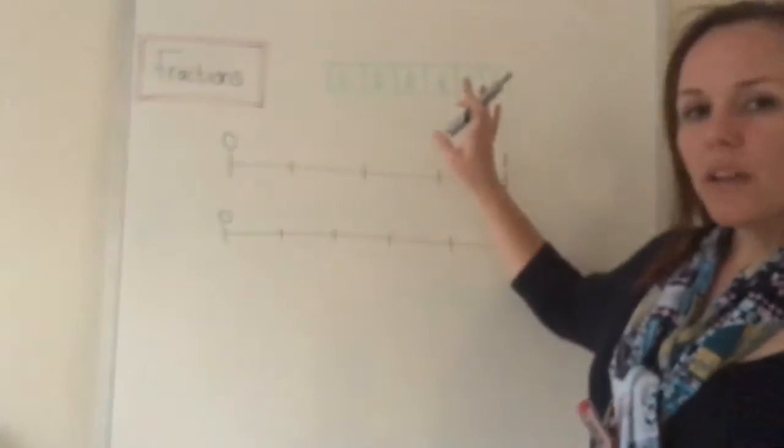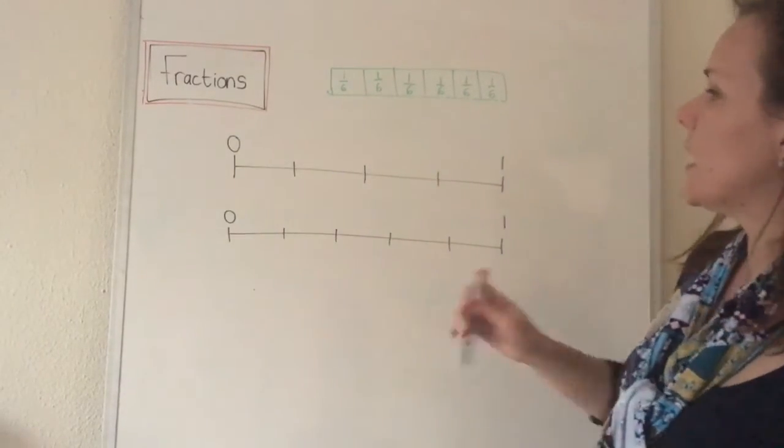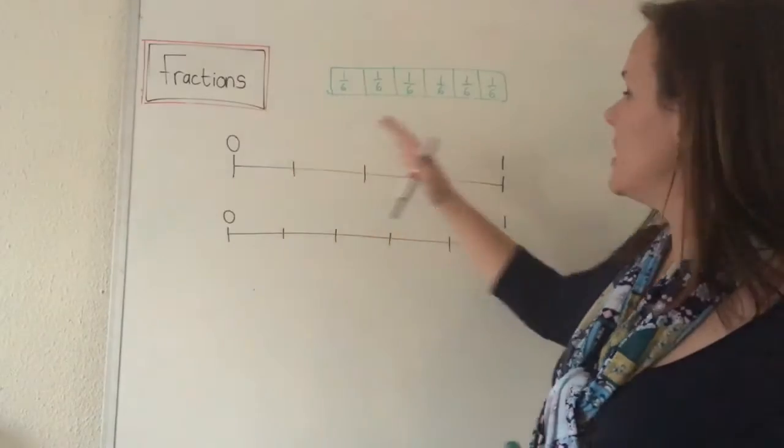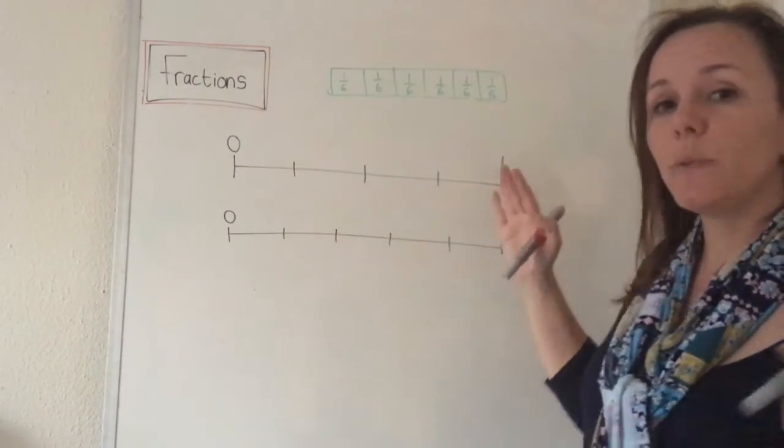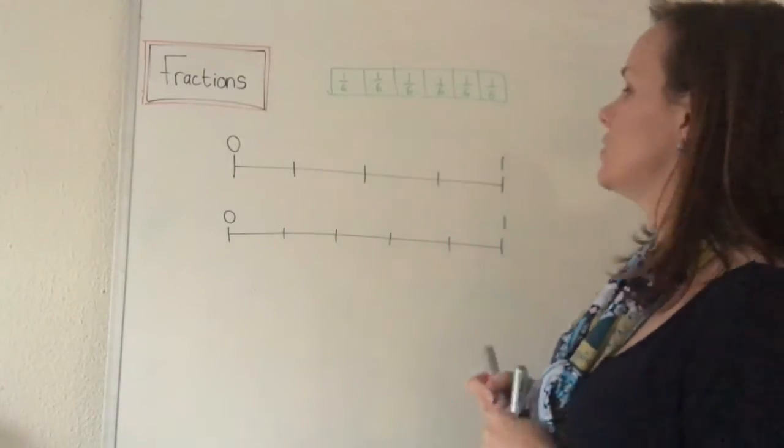So it's almost like that if we look at this number line over here. There's zero, that's when I have nothing, and there's one, that's when I have one whole ruler or chocolate or whatever you want to envision.